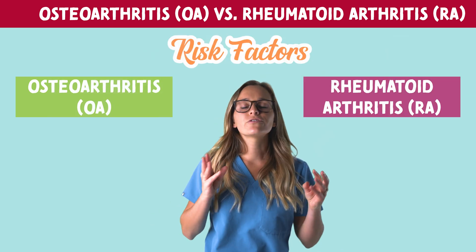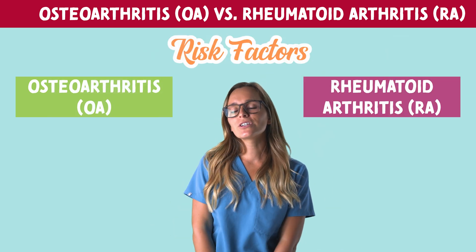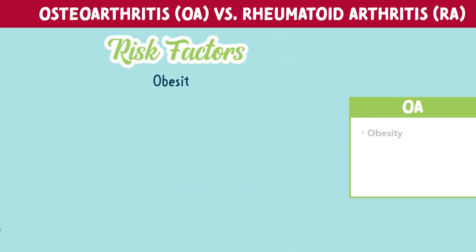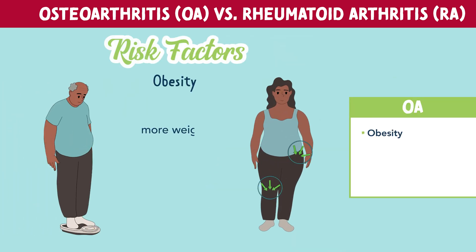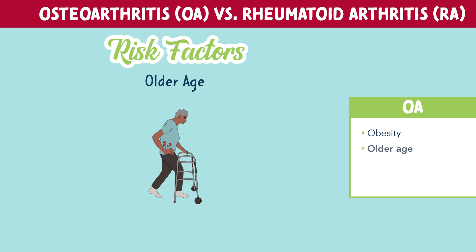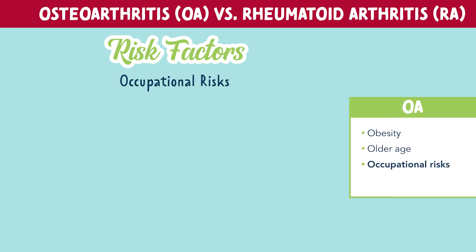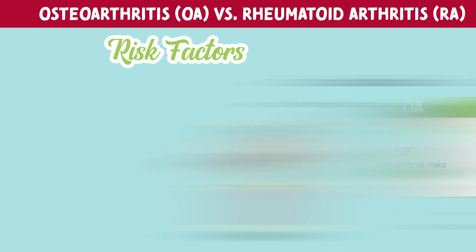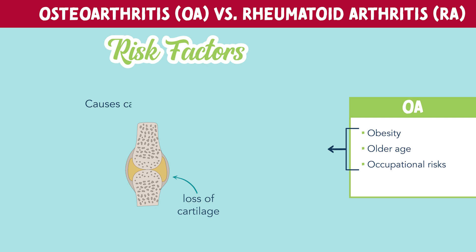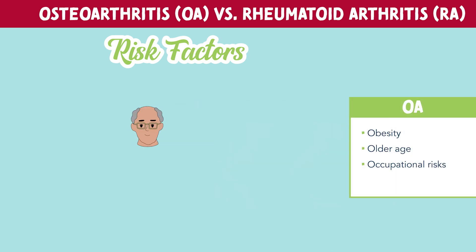Let's talk about the risk factors for each condition. The risk factors for OA include obesity — the more weight the patient has on their body, the more pressure it puts on the joints. Another risk factor is older age. Occupational risks, like heavy lifting or prolonged pressure on the joints, cause the cartilage to thin more quickly. And another risk factor is genetics.